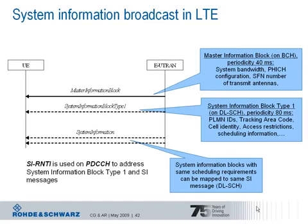The data in the master information block are the only system information transmitted via a dedicated control channel — that is, the physical broadcast channel. All other system information are transmitted using the shared channel principle. The logical broadcast channel can be mapped to either the broadcast channel or the downlink shared channel as transport channel. The BCH is then mapped to the physical broadcast channel, while the downlink shared channel is mapped to the physical downlink shared channel. This is a fundamental difference from 3G mobile communication systems.